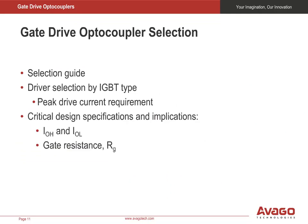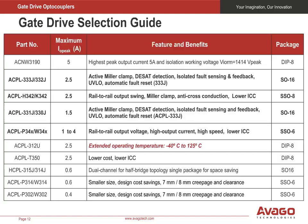Now let's get into the details of optically isolated gate driver selection and performance. We will discuss how you can easily calculate peak drive current and discuss critical design specifications such as the output high and low current and the selection of gate resistance. By following a few steps, you can select the best gate driver for your specific design. First, calculate the minimum gate drive current needed to turn your IGBT fully off. Next, start with the smallest peak current rating of the available devices and pick those that can cover the minimum gate driver current calculated.